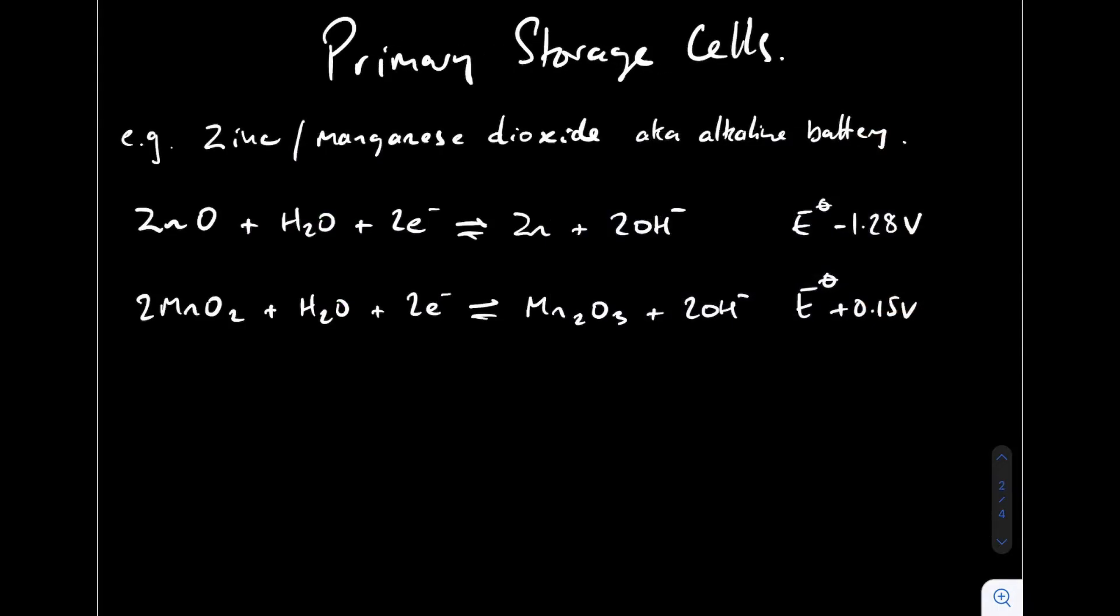If we start with the primary storage cells, an example is the zinc-manganese dioxide storage cell, which we commonly refer to as an alkaline battery. You can see I've got the two half equations for the two half-cells. You'd always be supplied with these, so don't think you've got to know these off by heart, and we've also got the standard electrode potential values for the two half-cells.